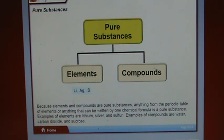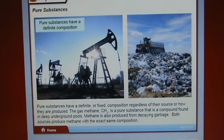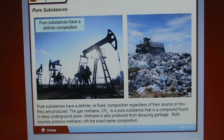Pure substances have a definite or fixed composition regardless of their source or how they are produced. The gas methane, CH4, is a pure substance that is a compound found in deep underground pools.